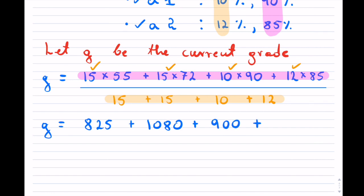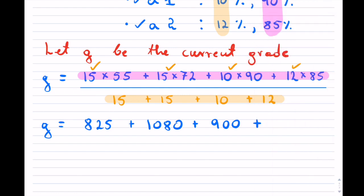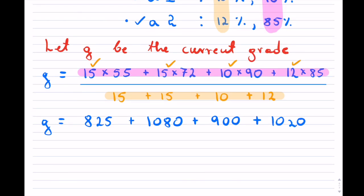You can still use your calculator. And 12 times 85. That is on top, which we will have to add. Now at the bottom we can actually add it directly. So 15 plus 15 is 30. 40, 52.